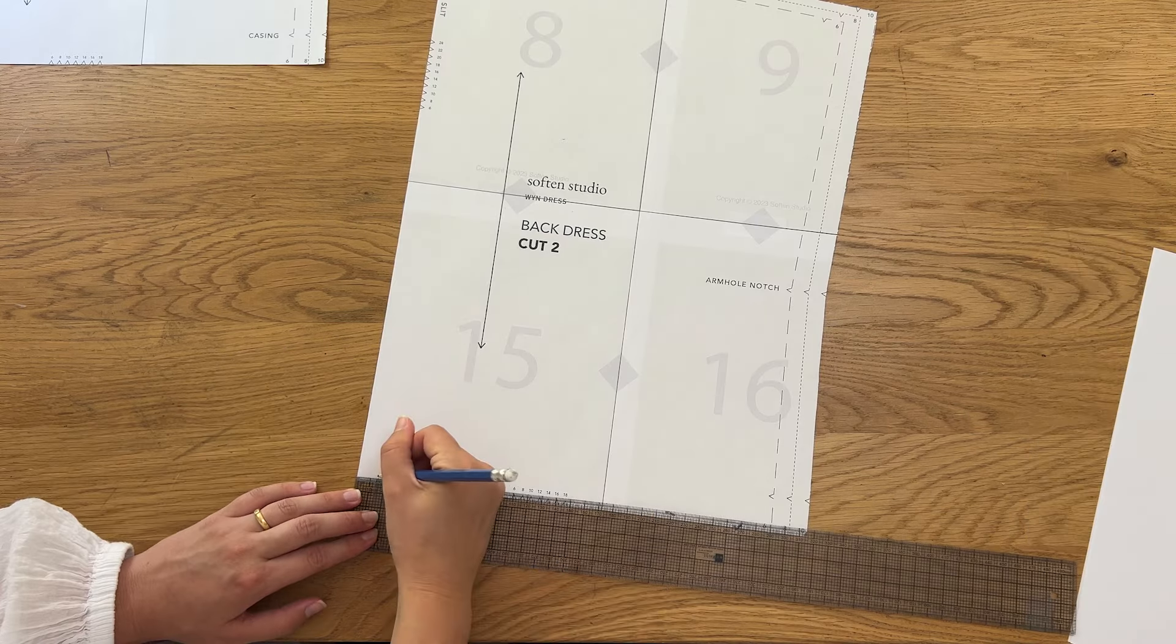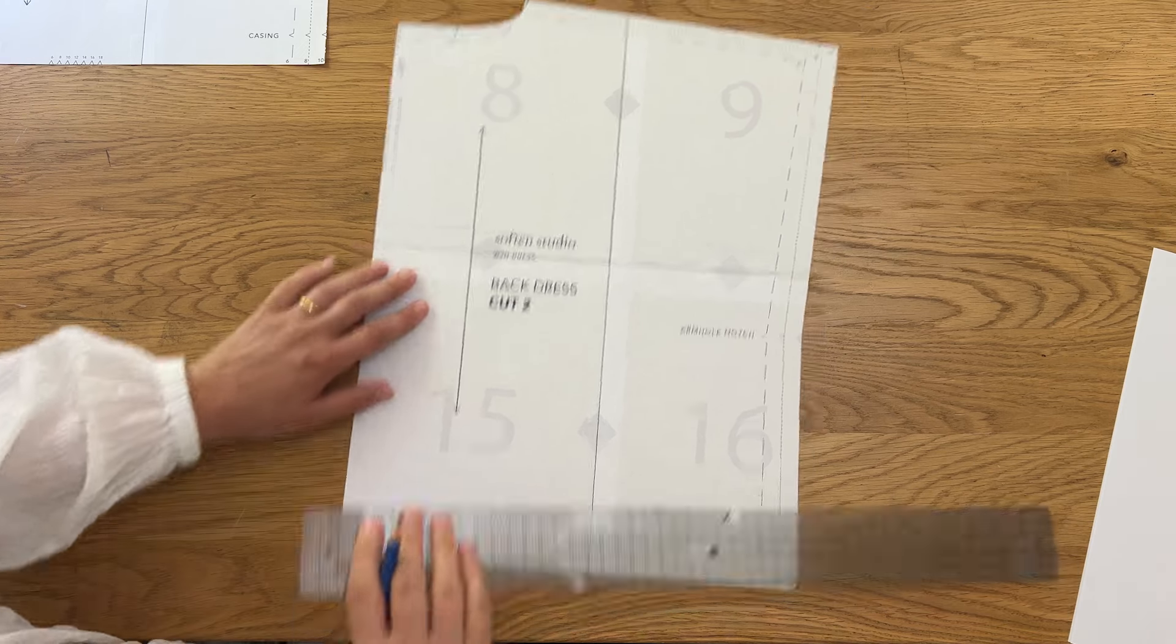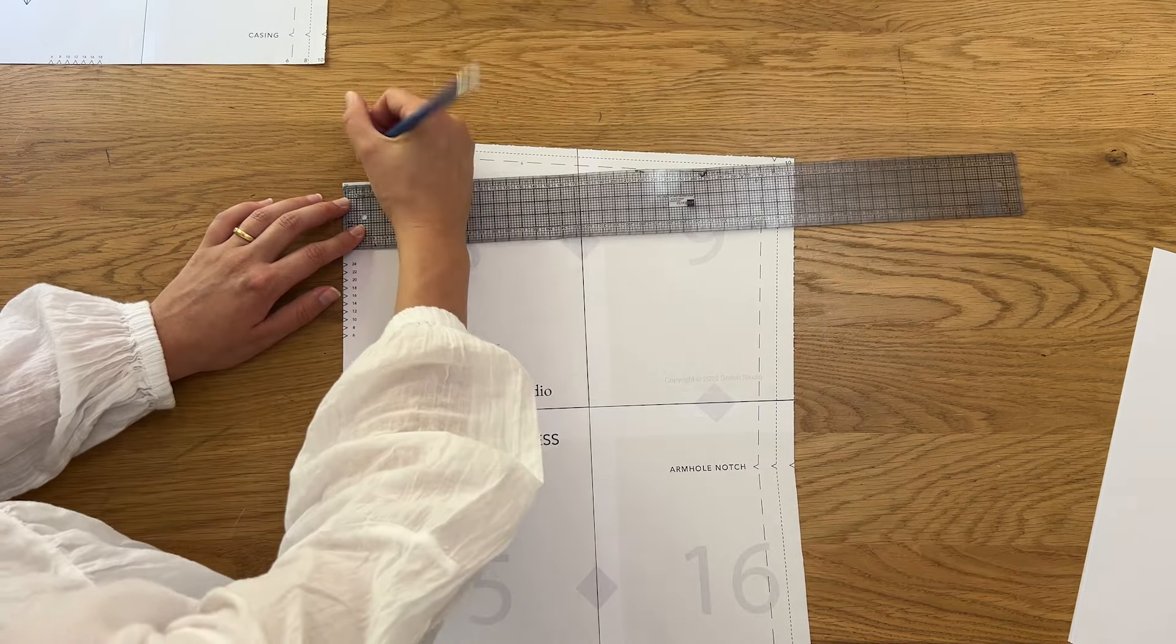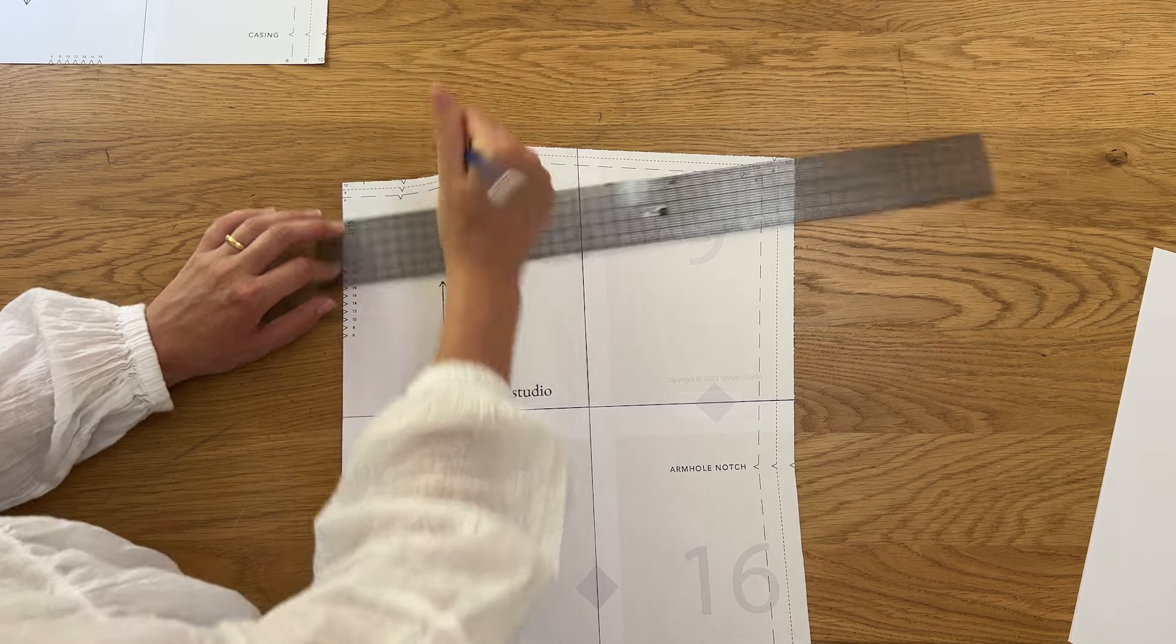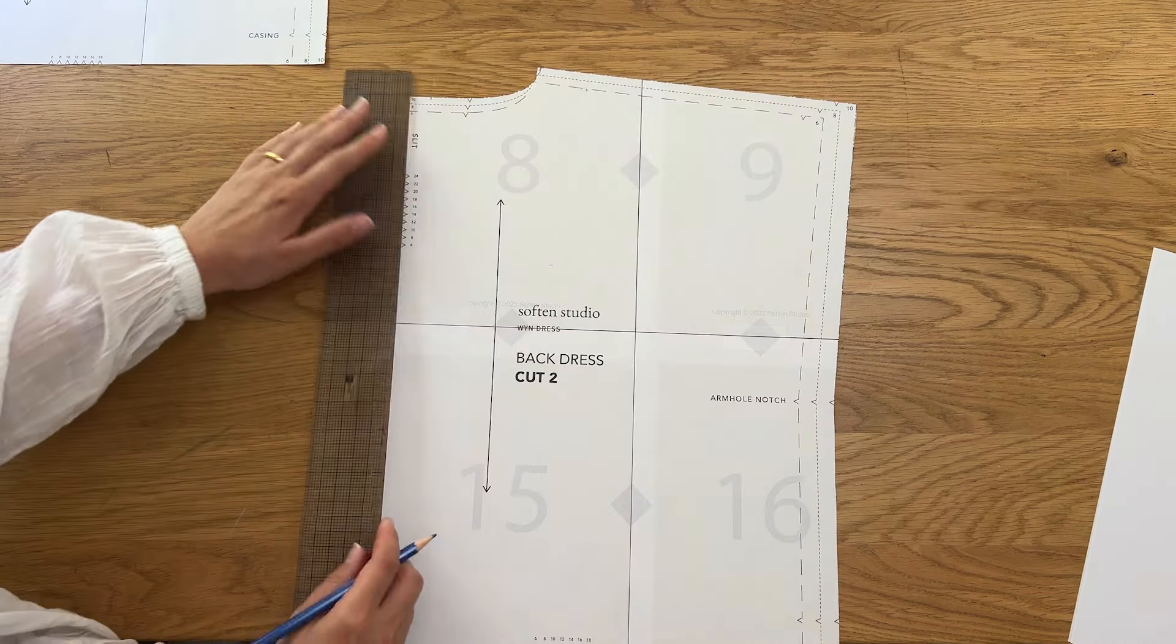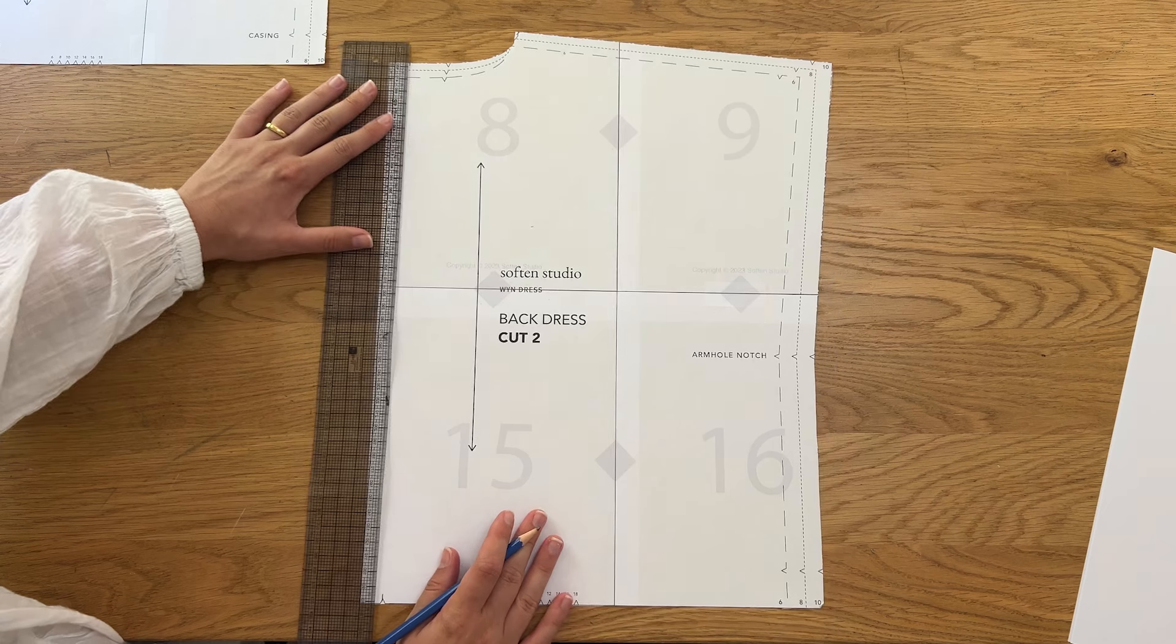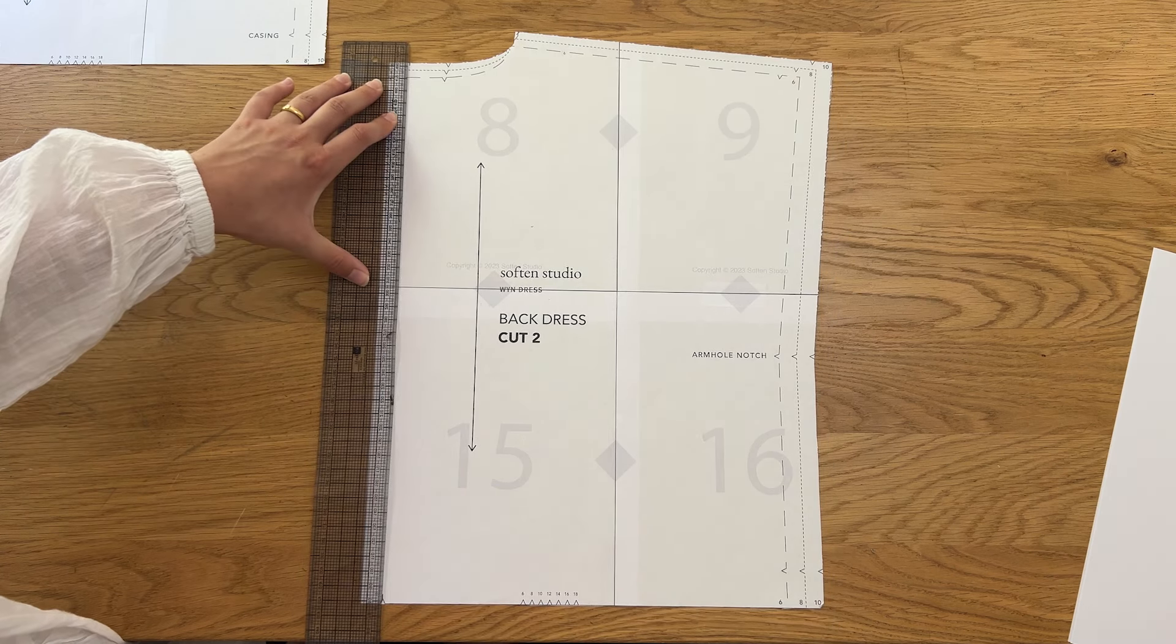We'll now work on the back pattern piece. On the wind dress there is a 1.5 centimeter seam allowance to allow for the center back button and loop closure. Because the neckline has now been opened with the v-neck this is no longer necessary.